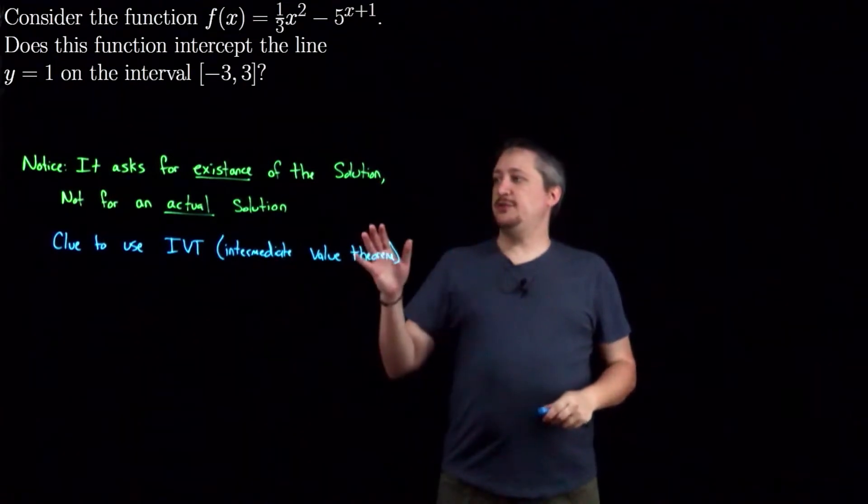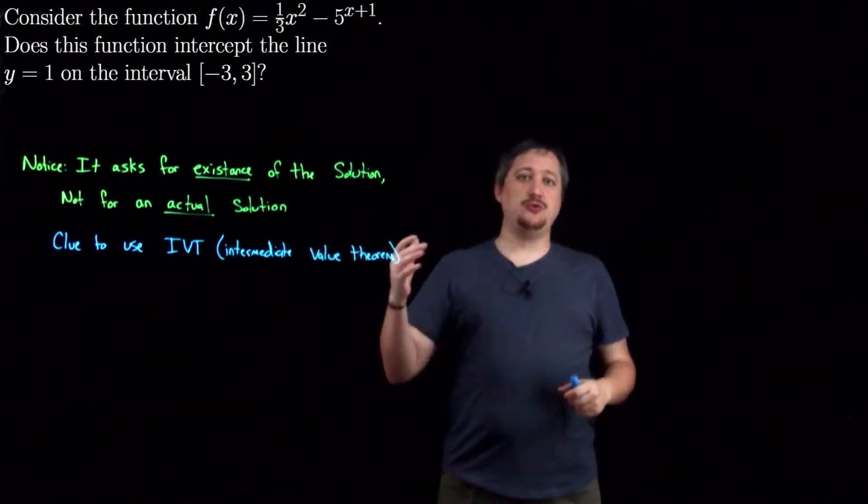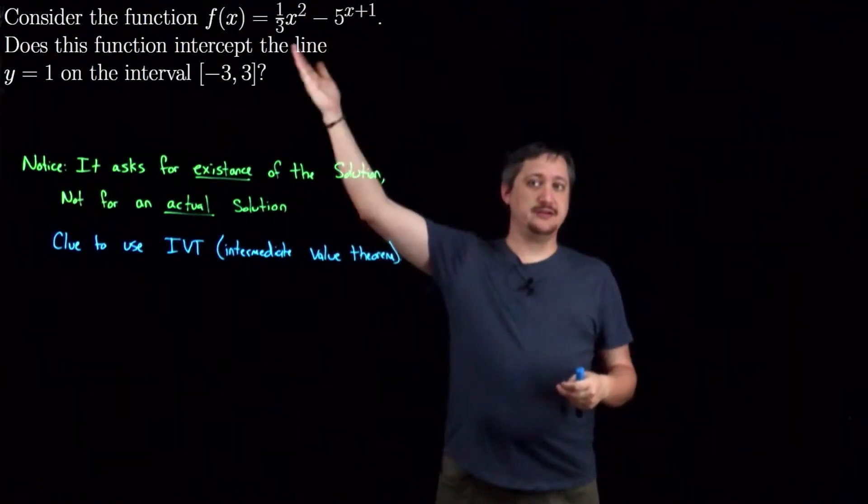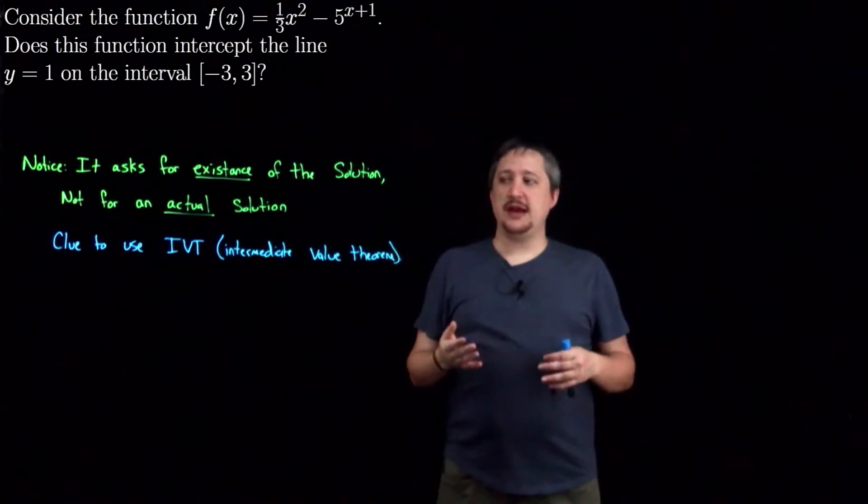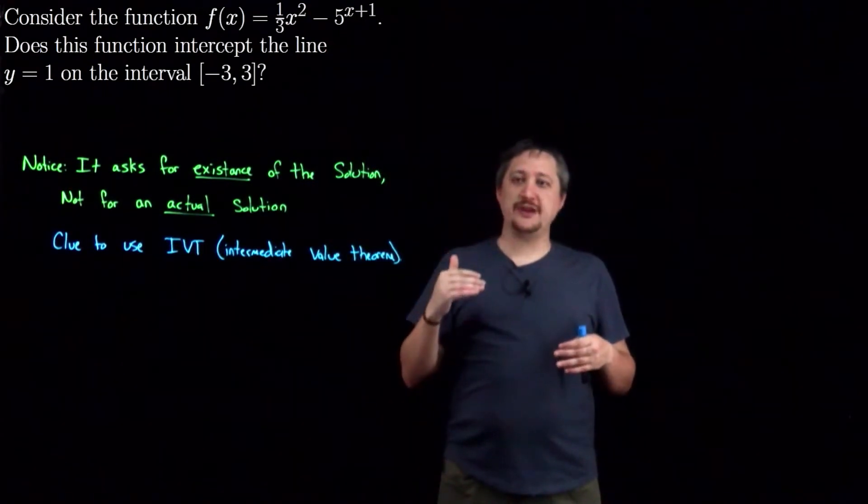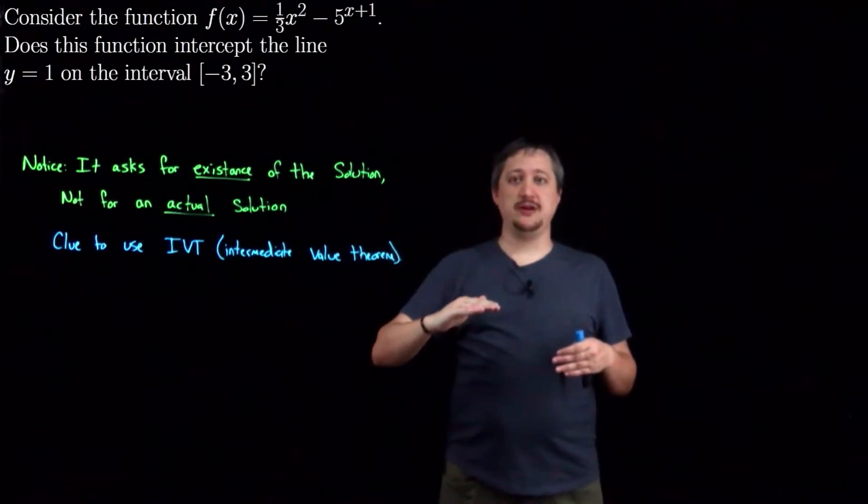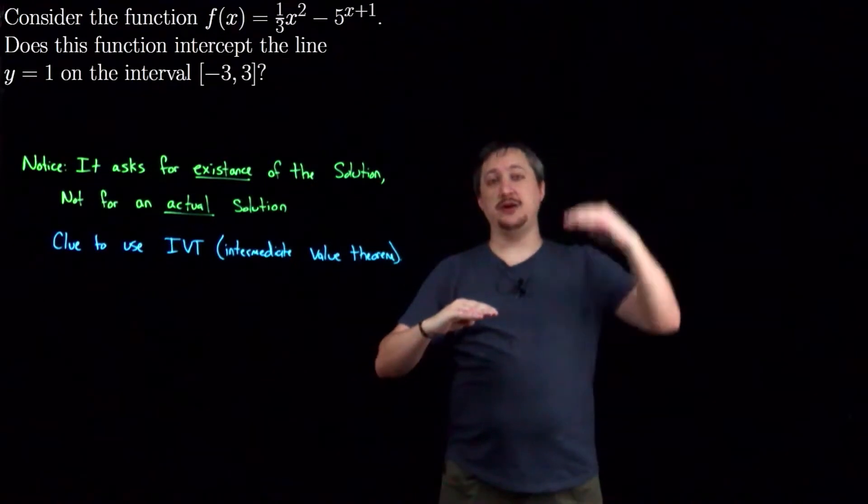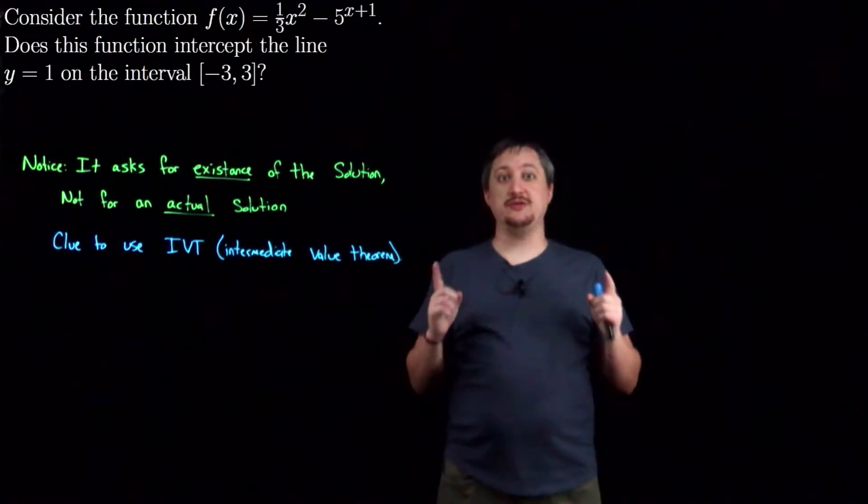So in particular then, if I could take my function and show that it's continuous, which it clearly is, and I can show that at a certain x value in this interval it's below y = 1 and another one it's above y = 1, that would be enough to tell me that it has to hit y = 1 somewhere between those values.